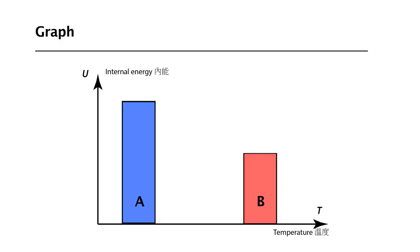Look at this graph. This graph represents the internal energy and temperatures of two objects A and B. The vertical axis represents their internal energy. From the graph, A has more internal energy than B. The horizontal axis represents their temperatures. From the graph, B is at a higher temperature.